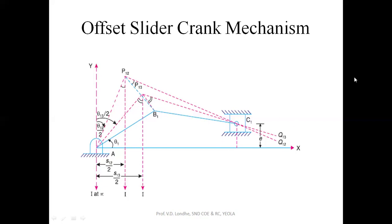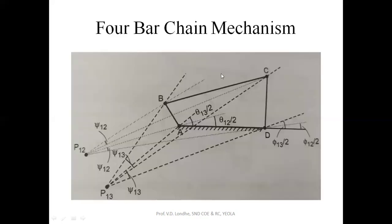Now, after the offset slider crank chain mechanism, we look at the four bar chain mechanism. In this four bar chain mechanism, the length of the fixed link is known, the length of the crank is known, the initial angle of the crank is known, and the second and third positions of both the crank and the output link are known. The fixed link, crank, coupler, and rocker (output link) are identified: input is given to link A-B and output is taken from link C-D.